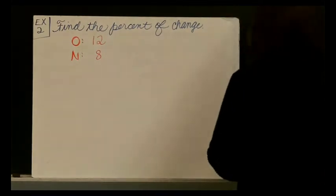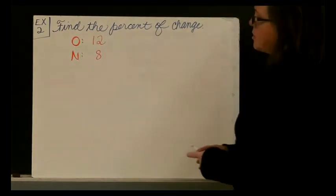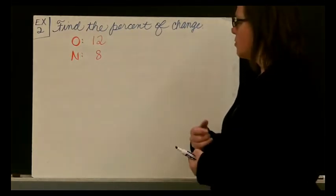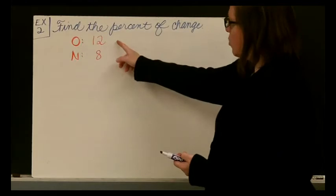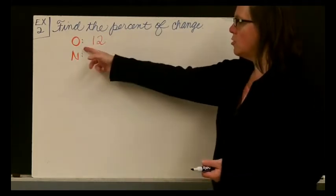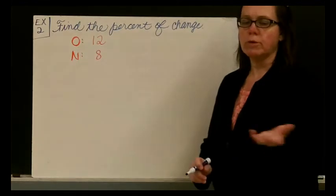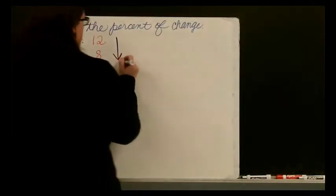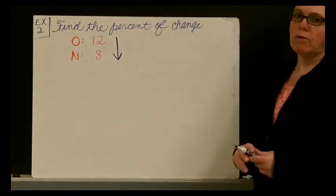So here we're working with smaller numbers here, but the steps are the same, whether they're great or small numbers. From 12 to 8, we always have to look in relation to our original number. So when we go from 12 down to 8, I already said it, we're going down. So I'm going to put my down arrow.